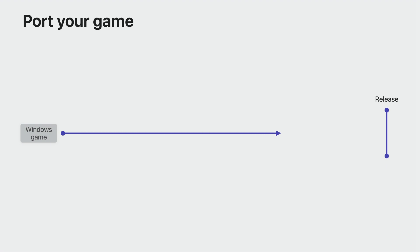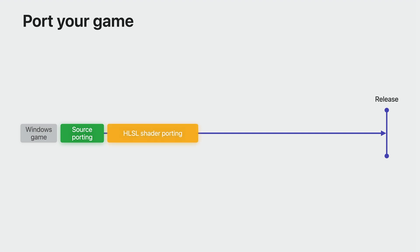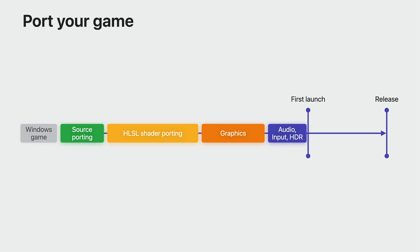Porting your Windows game to a whole new platform typically involves many steps before you even see your first scene running, including recompiling your source code, converting thousands of custom shaders from HLSL, re-implementing your graphics subsystem, and converting your use of audio, input, display, and HDR rendering — all before you can even see your first scene running natively — and then finally debugging and optimizing for performance before you release it.